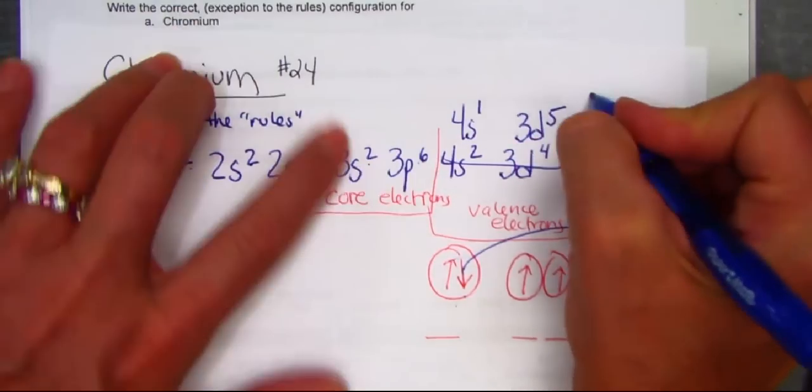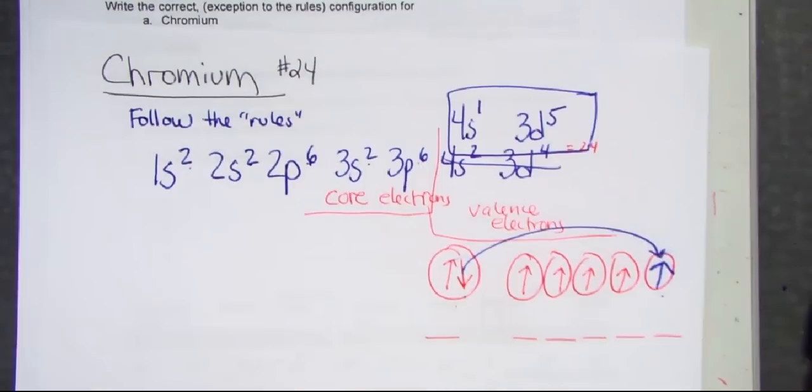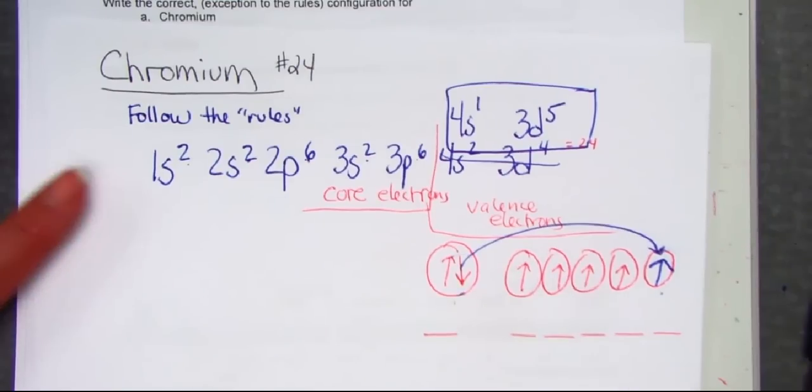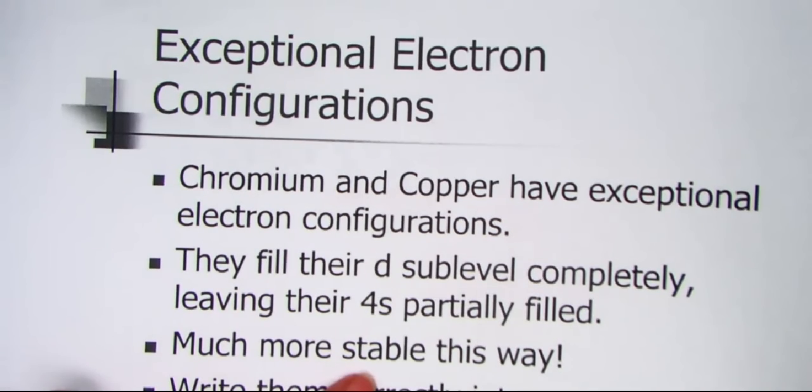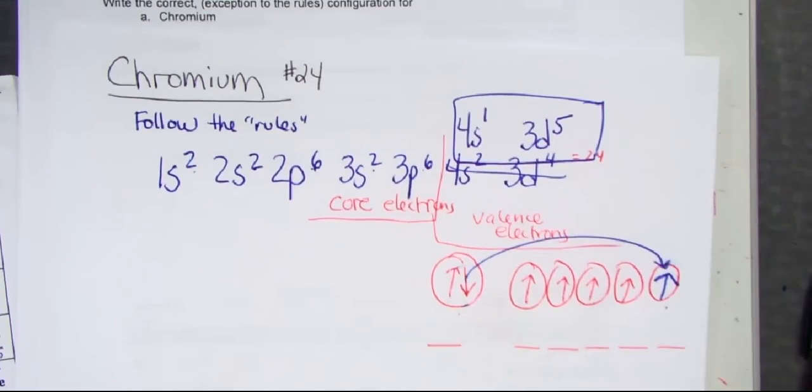4S1, 3D5 is the exceptional electron configuration of chromium, promoting that electron from the 4S out to the empty orbital 3D. And like we said, the reason it wants to do that is it's just actually a more stable configuration, spreading out the electrons, taking advantage of the empty orbital.